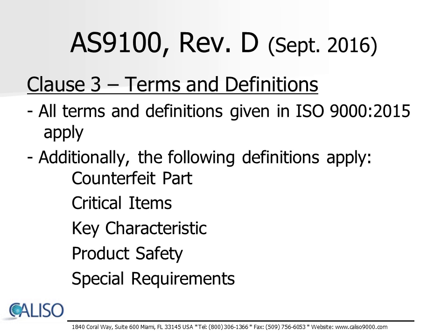In addition to the terms and definitions identified in ISO 9000:2015, AS9100D specifically identifies counterfeit part, critical items, key characteristics, product safety, and special requirements as applicable to the implementation of this standard.